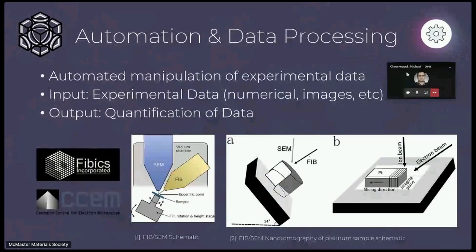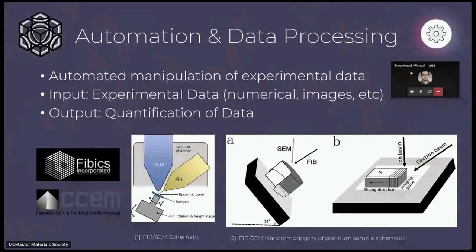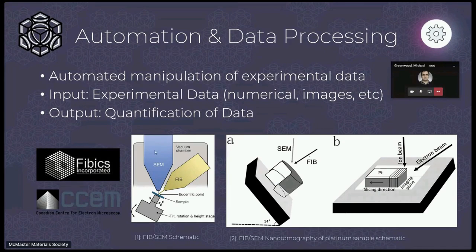For automation and data processing, the first bit is about manipulation of experimental data that material scientists can get. I'll be explaining it through my co-op experience at FIBiX Incorporated, a company I worked at after first year, which specializes in developing software and hardware for dual beam systems. As you can see in the schematic, there's an electron beam at the top providing imaging, and an ion beam — typically gallium — which can actually mill off surfaces of your sample.